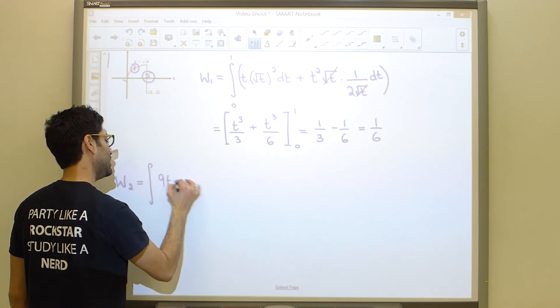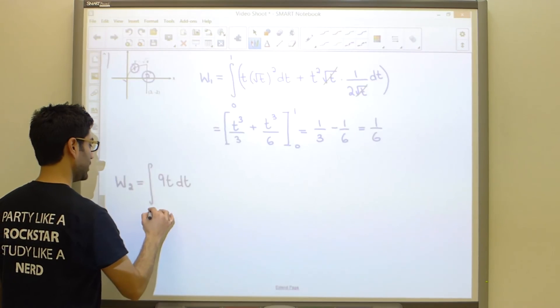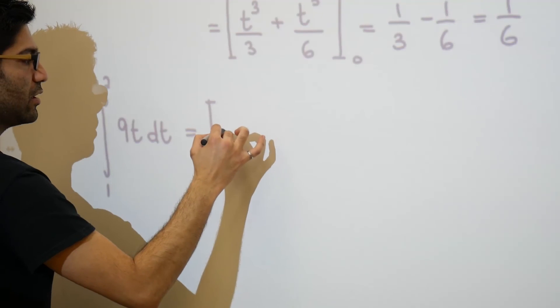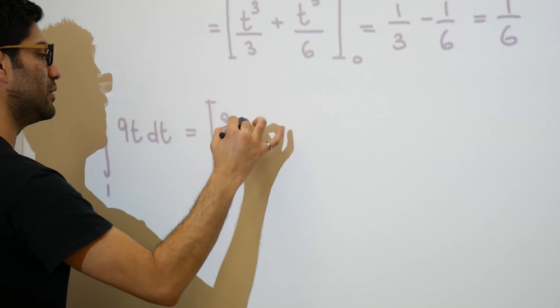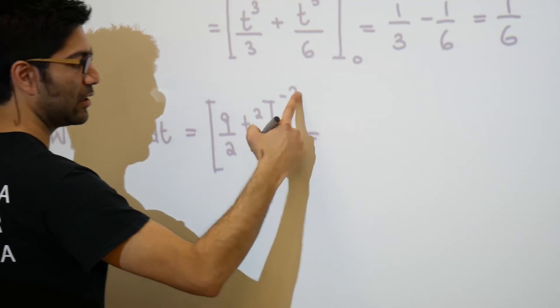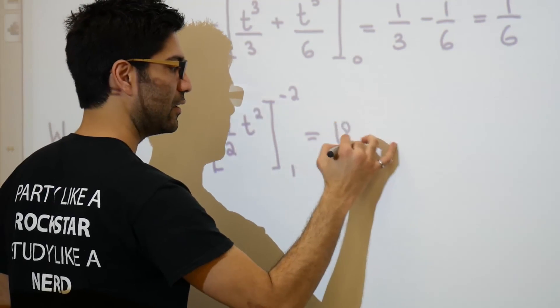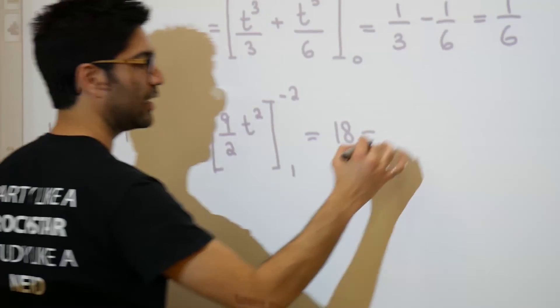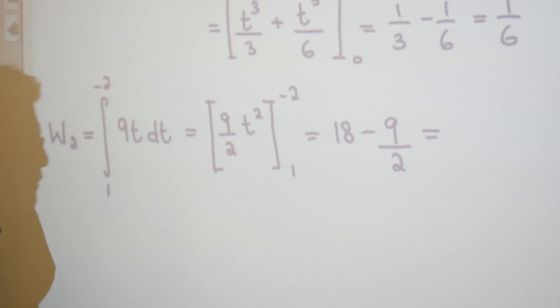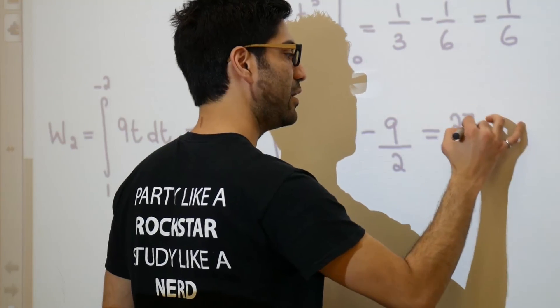So 9t dt, going from 1 to negative 2. And this is going to take a moment to finish. So this is going to become 9 over 2, t squared, going from 1 to negative 2. If I plug in the top, this is going to become 4 divided by 2. 4 divided by 2 is 2 times 9 is 18, minus, take the bottom and plug it in. So 18 minus 9 over 2. That's going to give us, so 18 minus 4.5 essentially is 27 over 2.